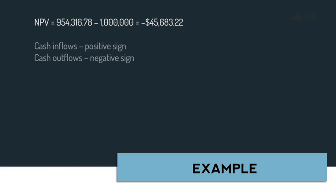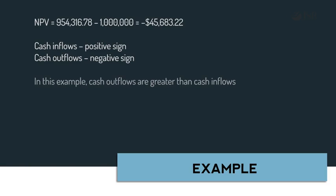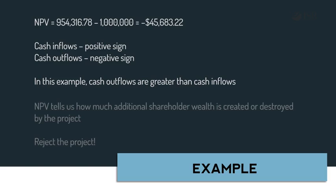Subtracting $1,000,000 from $954,316.78 gives us an NPV of negative $45,683.22. We will always denote cash inflows with a positive sign and cash outflows with a negative sign. In this example, since the NPV is negative, it tells us that the present value of outflows is greater than the present value of inflows generated from the project — that is, we do not recover our initial investment of $1,000,000. Hence, our decision would be to reject the project.